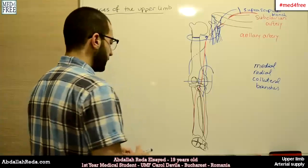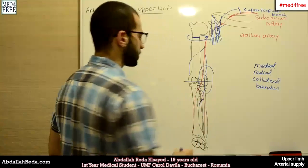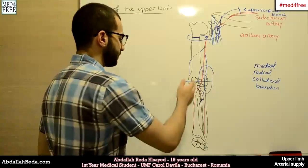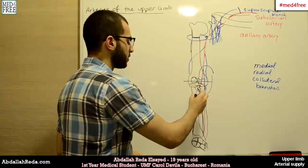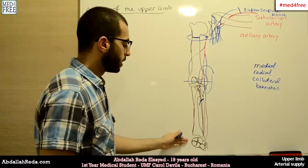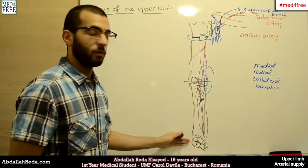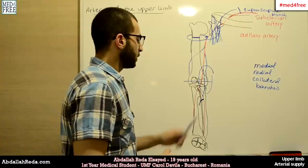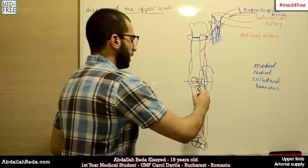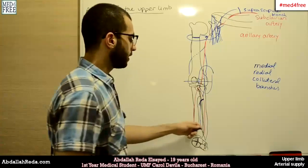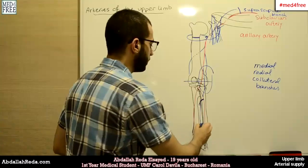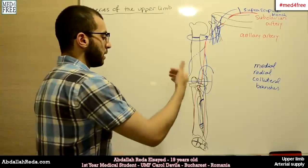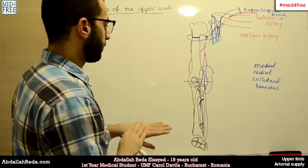The ulnar artery also gives another important branch — the interosseous branch. The interosseous branch gives two branches. We have a posterior branch that goes immediately to the posterior compartment of the forearm, supplies it, and travels through the forearm to participate in the formation of the dorsal carpal network on the dorsal side of the hand. The other branch is anterior, going through the forearm until the pronator quadratus muscle. After this muscle, it penetrates the interosseous membrane and anastomoses with the posterior branch, also participating in the formation of the dorsal arterial network of the hand.